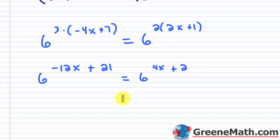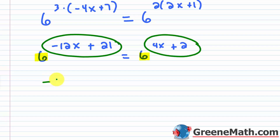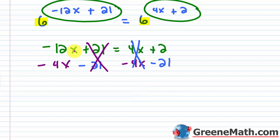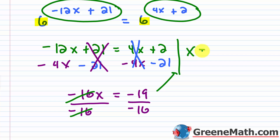Now we have like bases — six and six — so set the exponents equal: negative 12x plus 21 equals four x plus two. Subtract four x from both sides, and subtract 21 from both sides. Negative 12x minus four x is negative 16x, and two minus 21 is negative 19. Divide both sides by negative 16. x equals negative 19 over negative 16, which is 19 over 16. Since 19 is prime, that's already in simplest form.